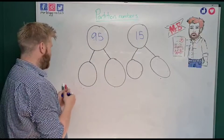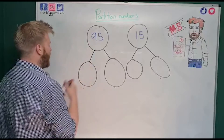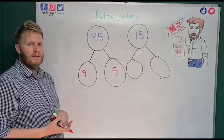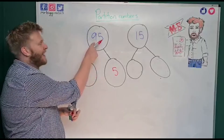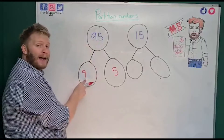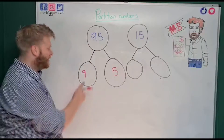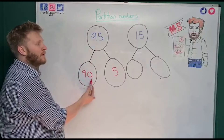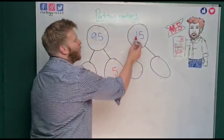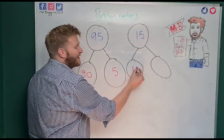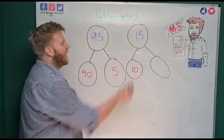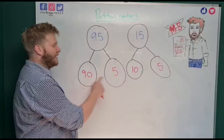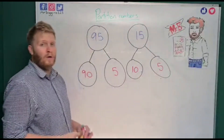So we've got 95 — see if you can spot a mistake I'm going to make. I put my nine here and my five there. Can you spot the mistake? The nine is in the tens column, so nine tens isn't just nine — it's 90, with a zero on the end. Now for 15, I've got one ten which is 10 — put a zero to make it ten — and then the ones is five. So 95 can be partitioned into 90 and 5, and 15 into 10 and 5.